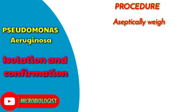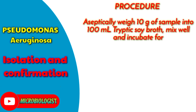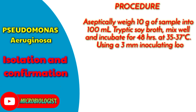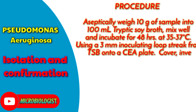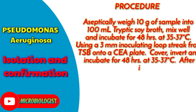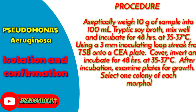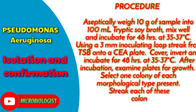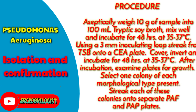Procedure: Aseptically weigh 10 g of sample into 100 ml tryptic soy broth. Mix well and incubate for 48 hours at 35 to 37 degrees Celsius. Using a 3 mm inoculating loop, streak from TSB onto a CEA plate. Cover, invert, and incubate for 48 hours at 35 to 37 degrees Celsius. After incubation, examine plates for growth. Select one colony of each morphological type present. Streak each of these colonies onto separate PAF and PAP plates.